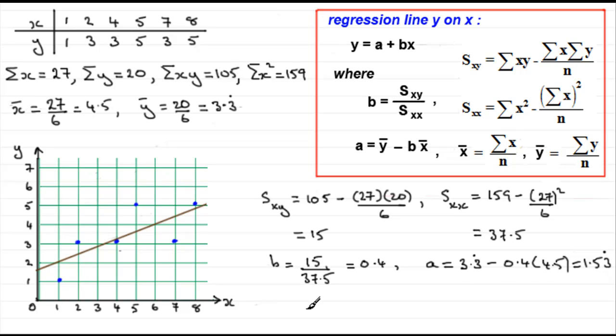So we're in a position now to say that the line for the regression line of y on x is going to be y equals a plus bx. It's going to be y equals a, which we now know is 1.53 recurring, plus bx. So that's going to be b, which was 0.4, and then we've got x. So let's just underline that so that we can see that there's our regression line of y on x.